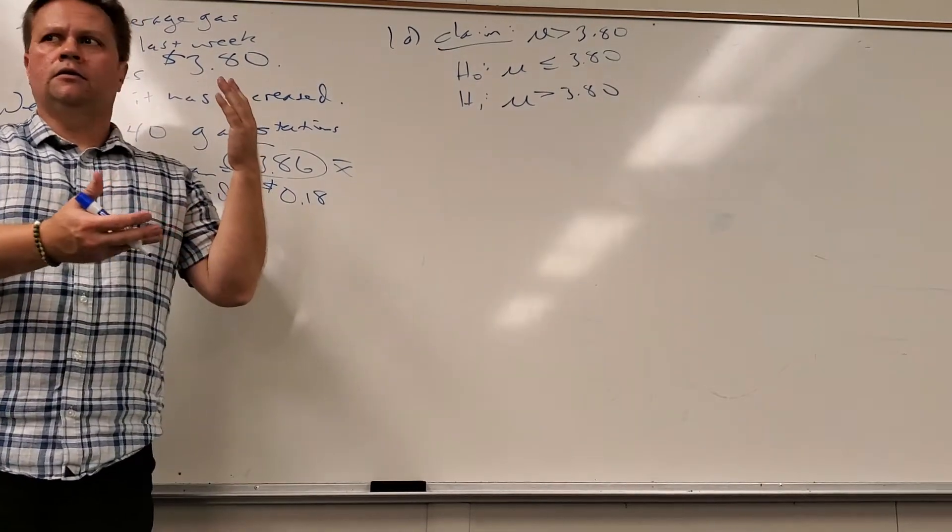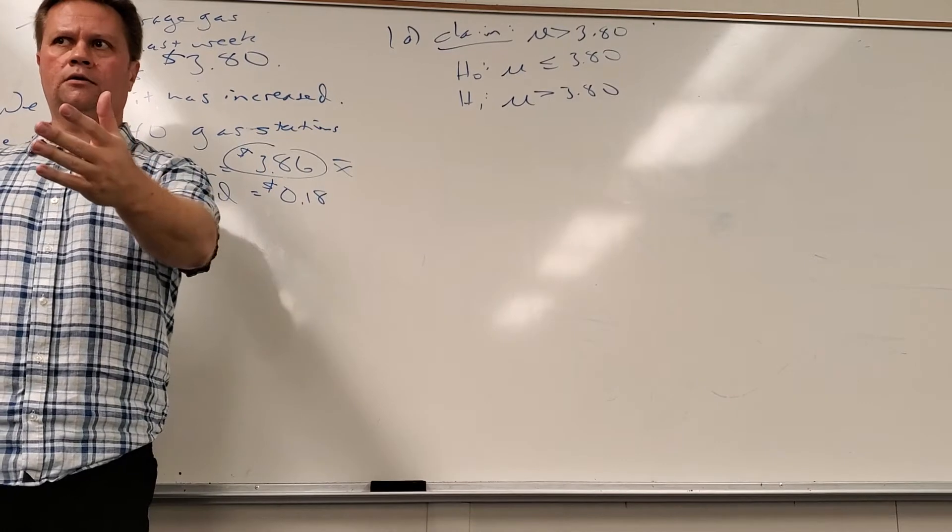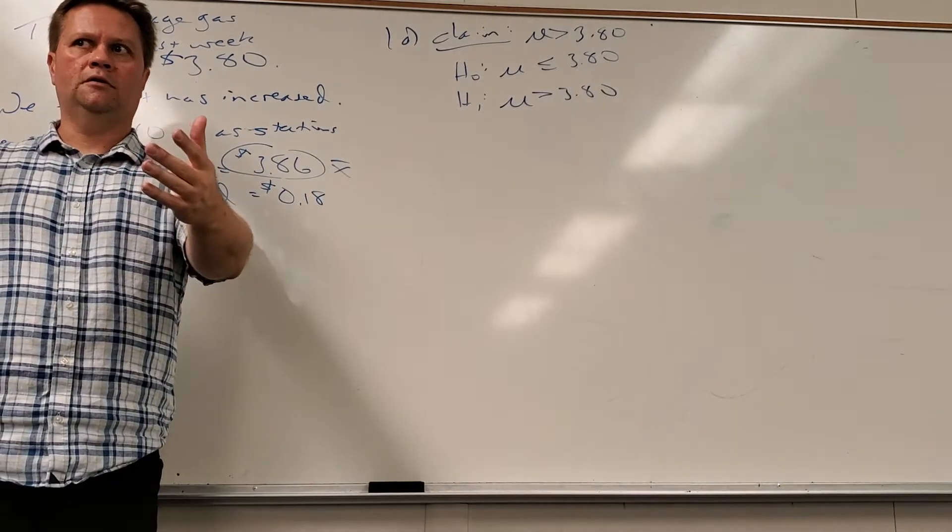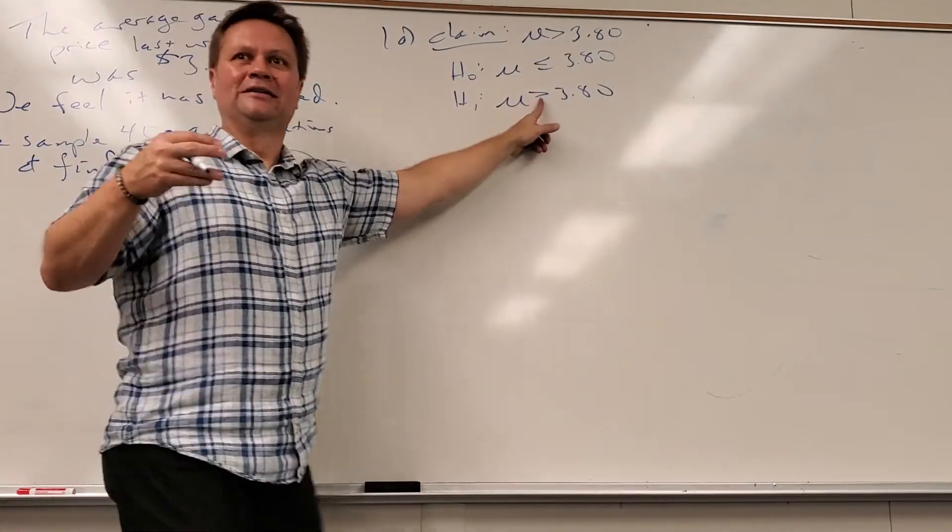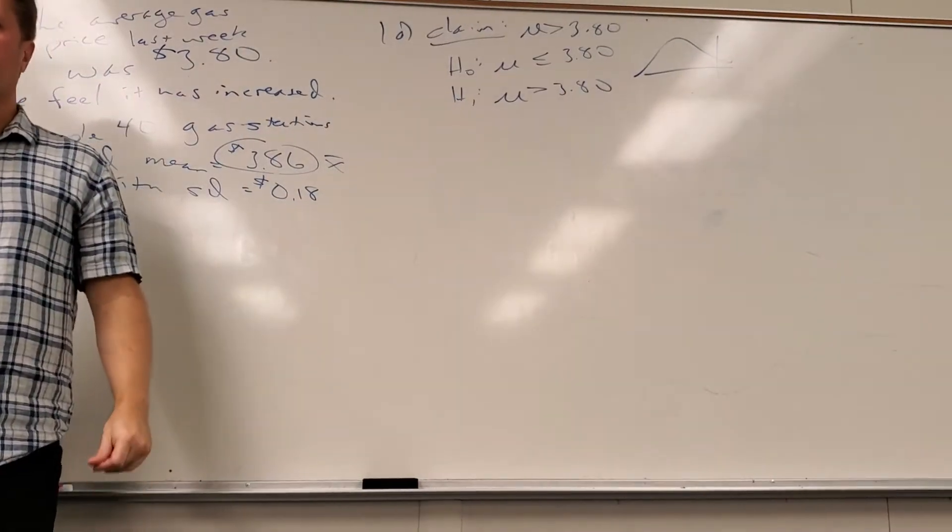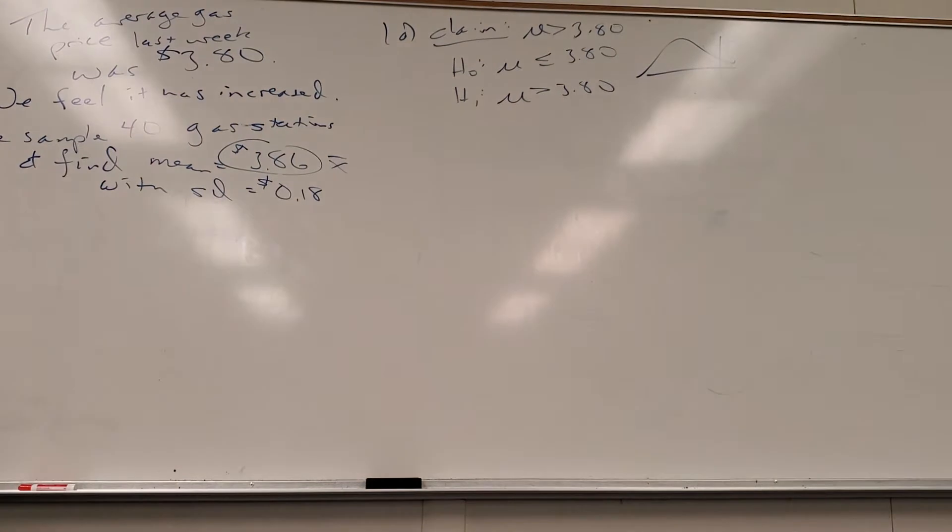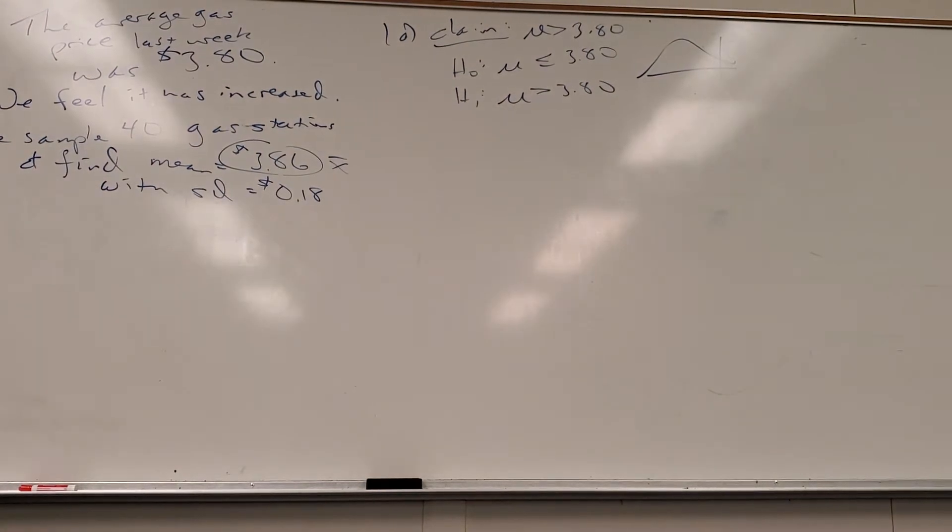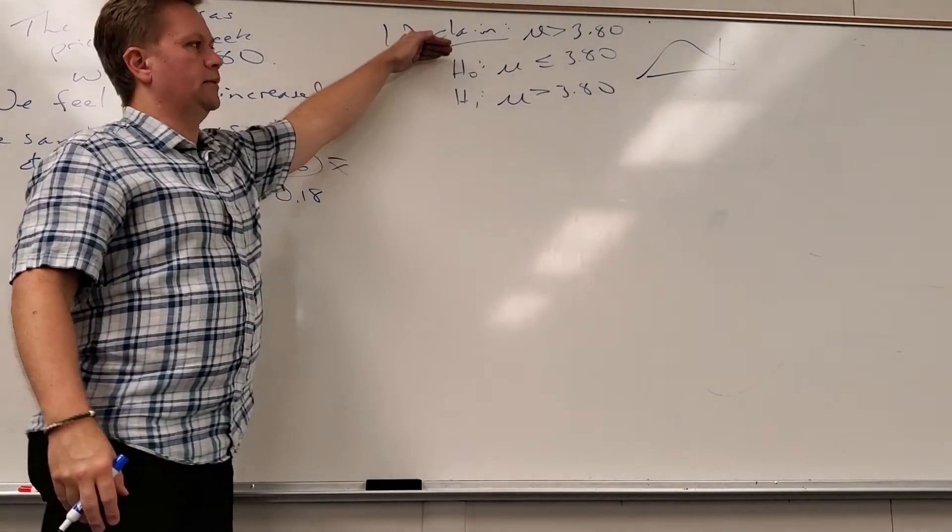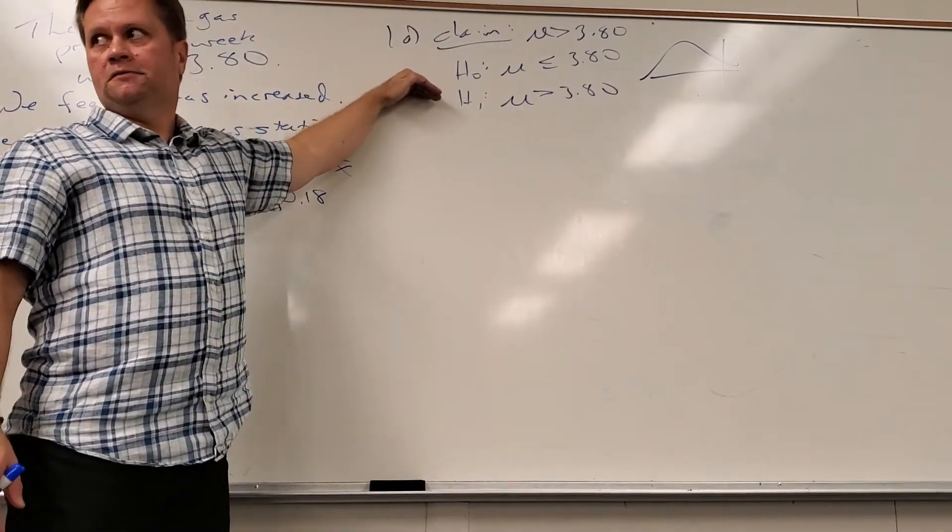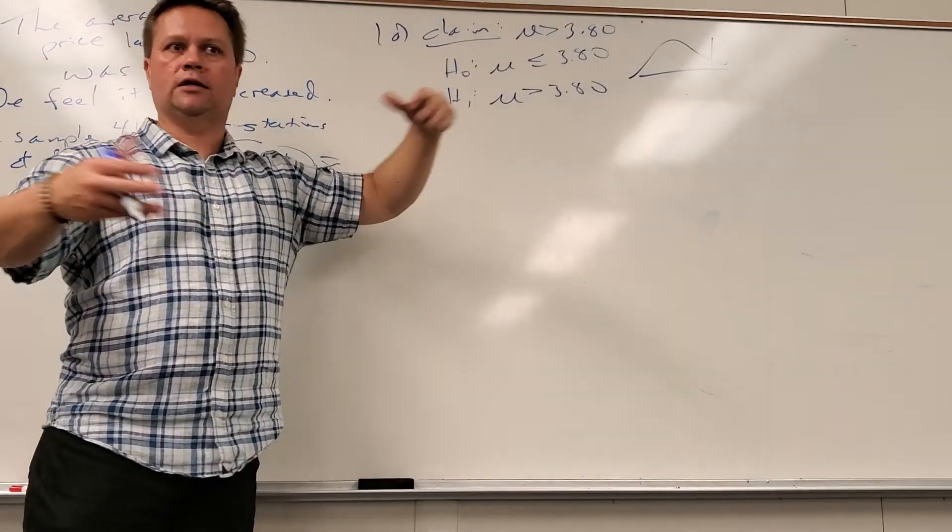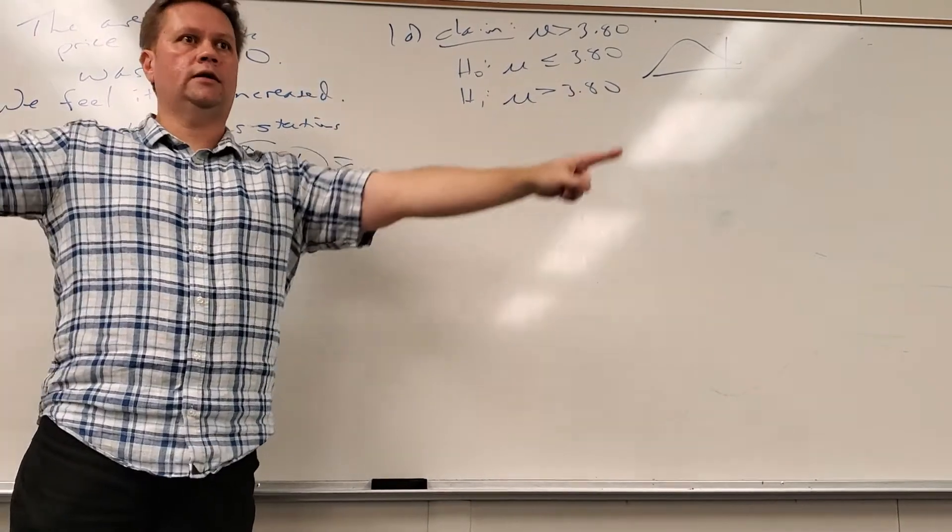How many tail test, obviously? Where's that tail gonna be? Up or down? Which way is the arrow pointing? Up. One tail, right? Do you always base the tail off of the claim? No. Which one of these always sets up the rejection region? The alternative hypothesis does. And it really is just which direction is the arrow going. If it's not equal to, then that's going to be a two tail test.